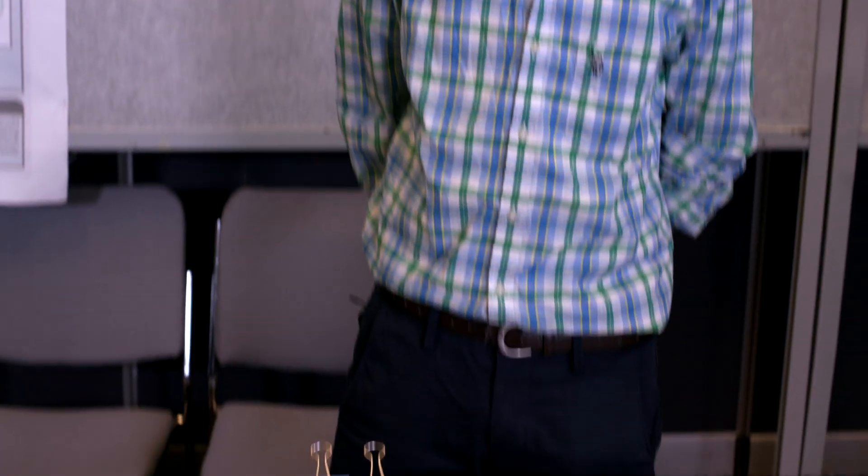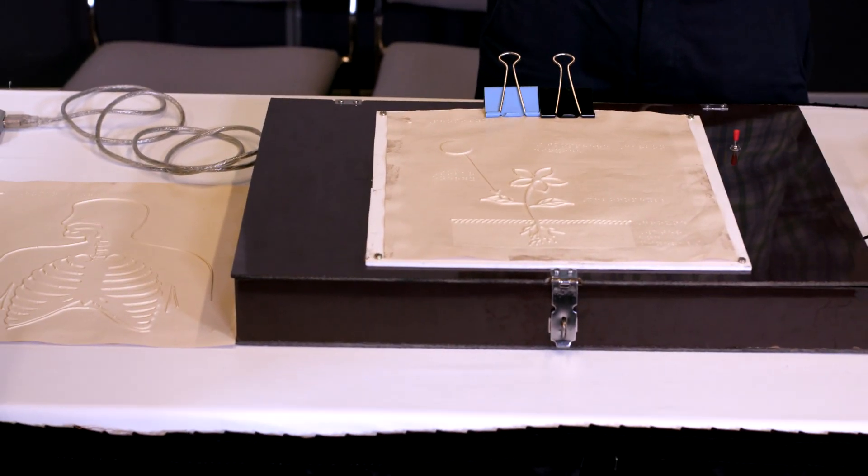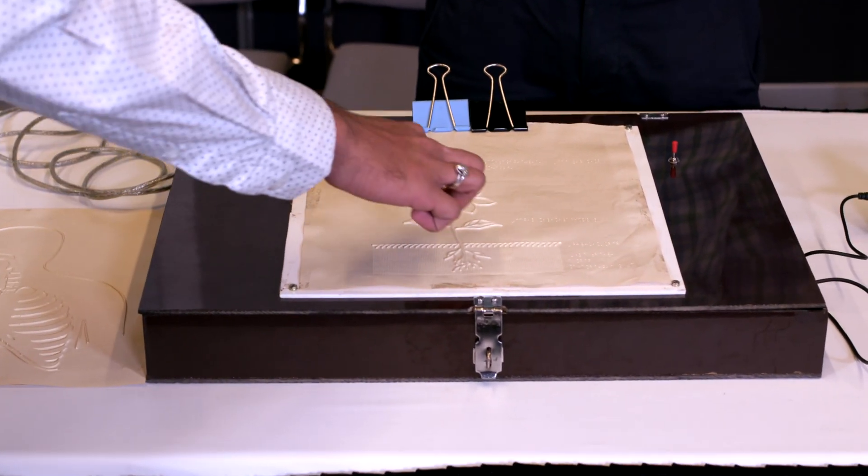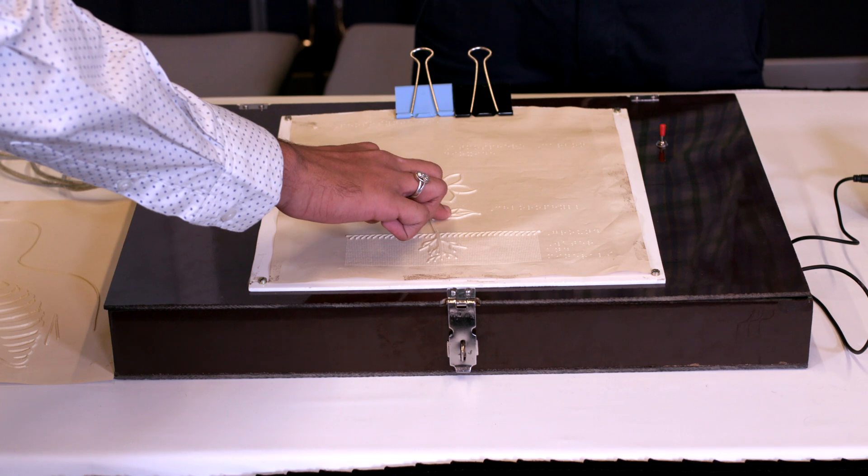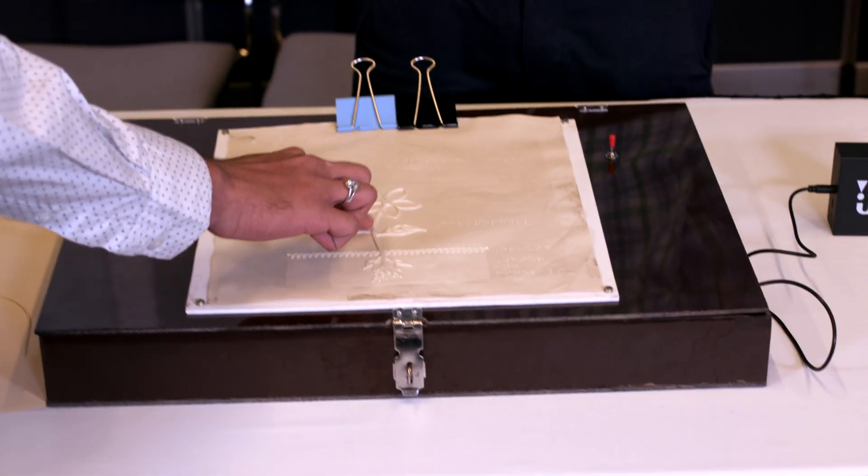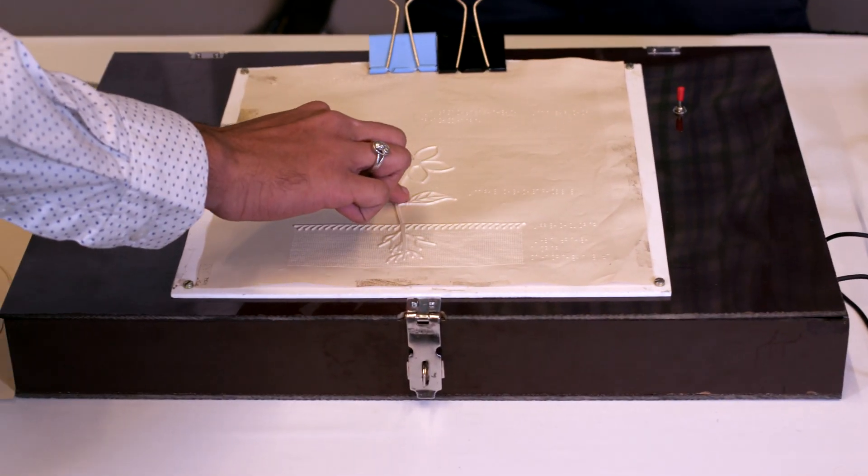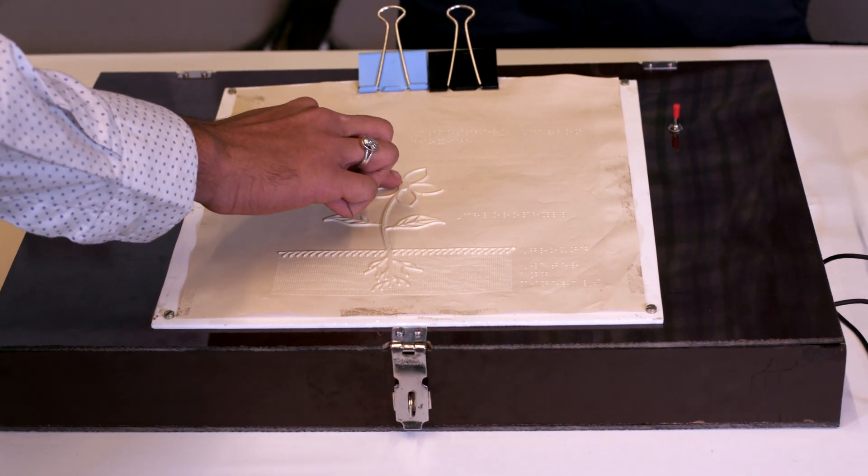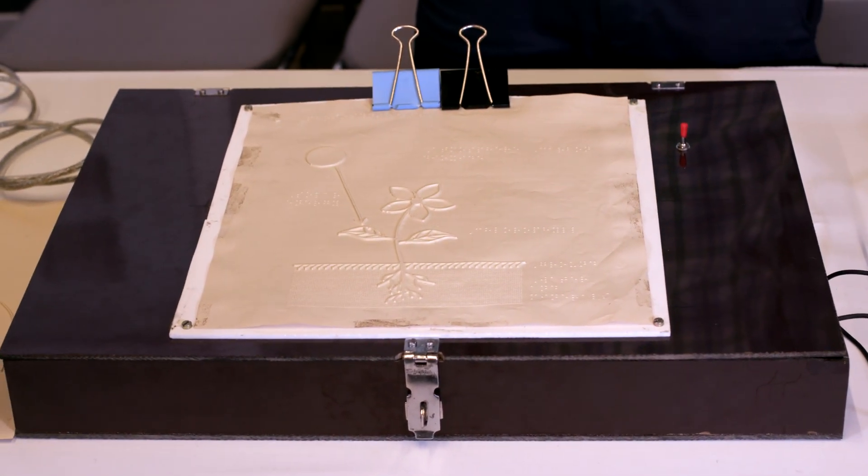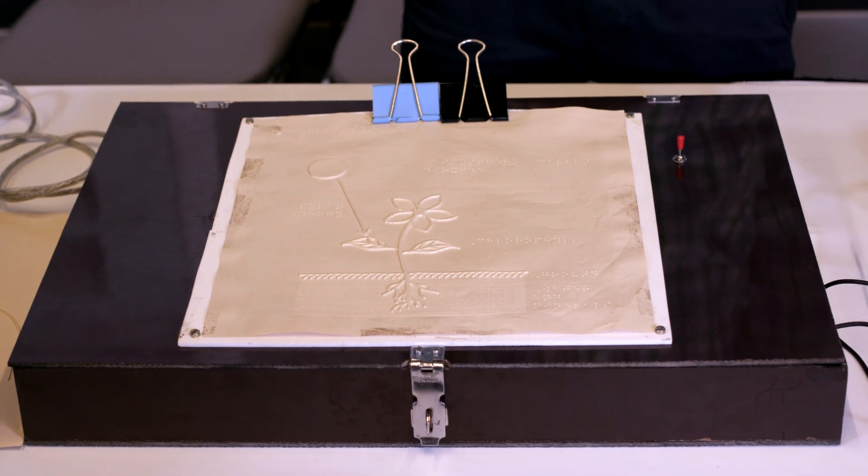Once the visually impaired student gets an idea of how many labels are present in the diagram and how they are spatially located, they can move on to the long mode, which delivers more detailed information about each label. Device is in long mode. This diagram depicts different parts of a plant. The leaves are the primary site of photosynthesis. They manufacture food for the plants. The flower is the reproductive part of the plant. The ovary of the flower develops into fruits containing seeds.